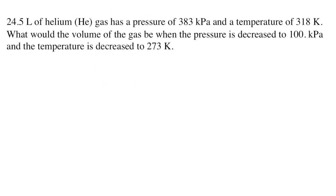Here's the kind of homework question you would need to solve for your chemistry class. 24.5 liters of helium gas has a pressure of 383 kilopascals and a temperature of 318 Kelvin. What would the volume of the gas be when the pressure is decreased to 100 kilopascals and the temperature is decreased to 273 Kelvin?